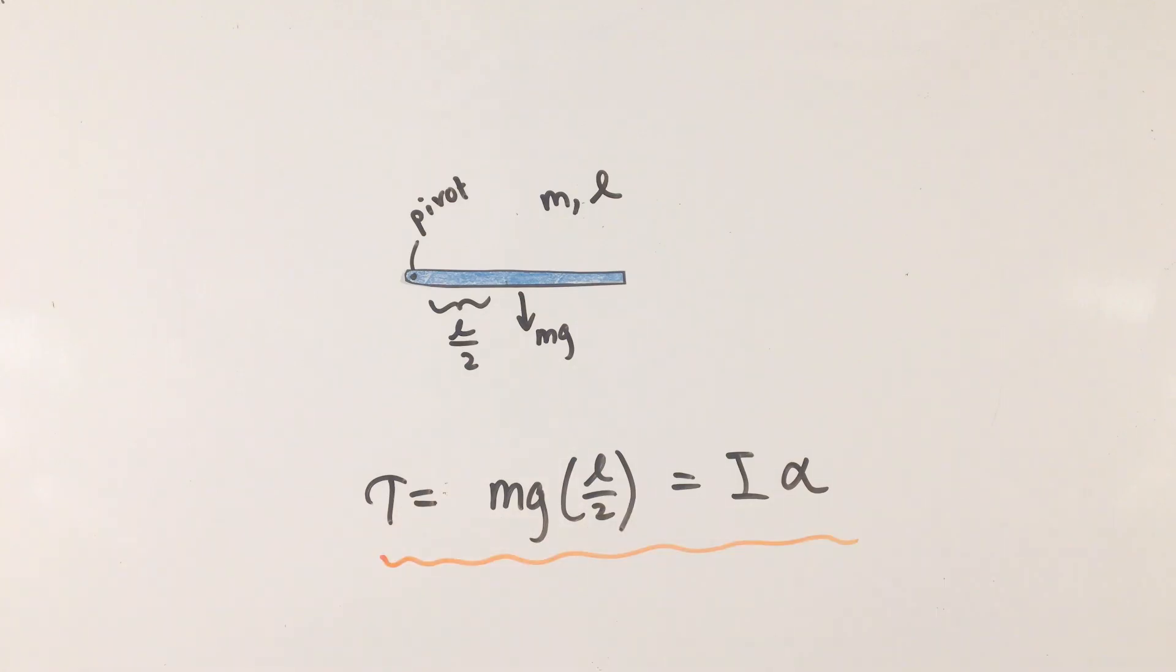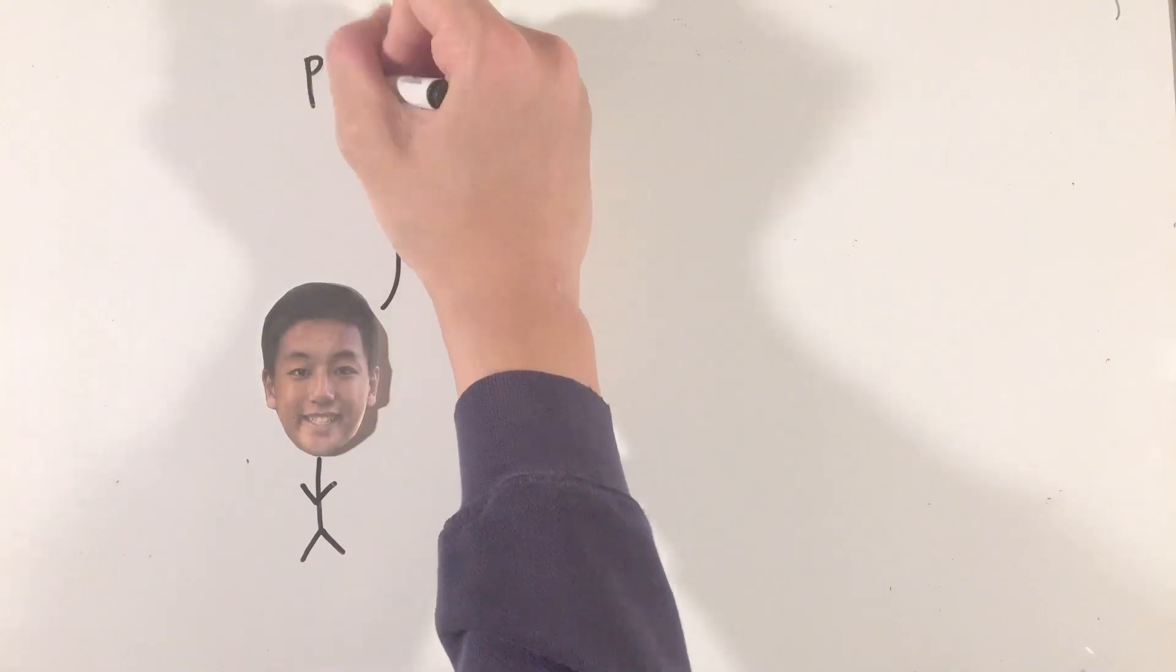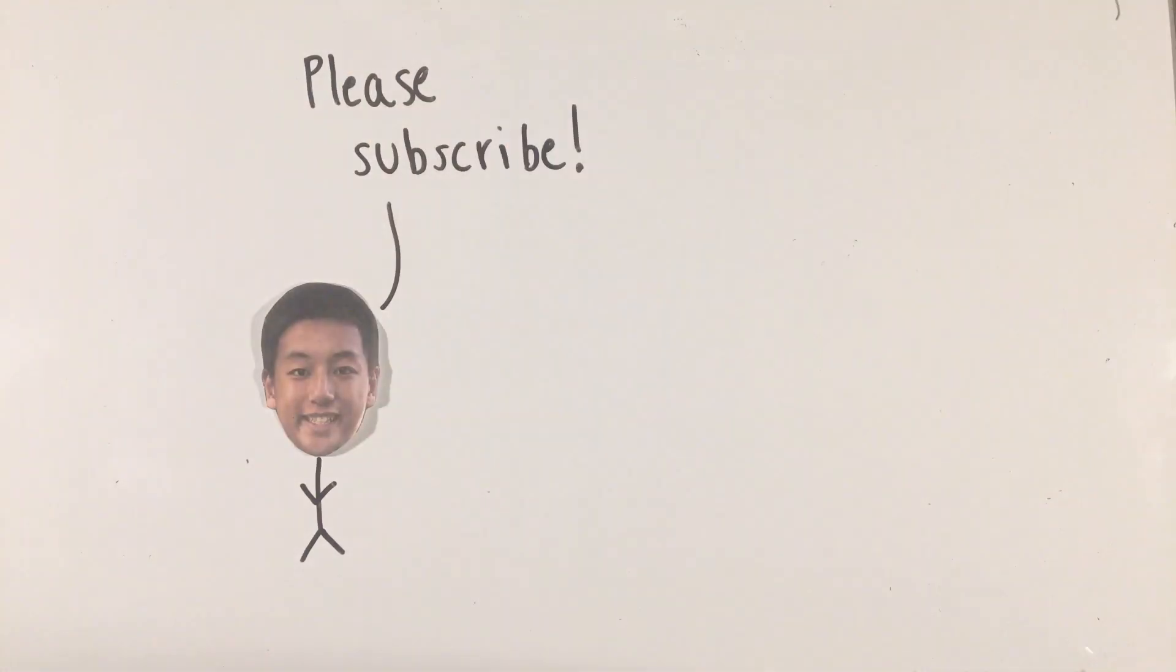By selecting a pivot point that makes the torques due to the unknown complicated forces equal to zero, and by applying the relationship torque equals moment of inertia times angular acceleration, these problems should soon become simple and easy to handle. With that, you can feel good that you've just finished learning about torque and moment of inertia.